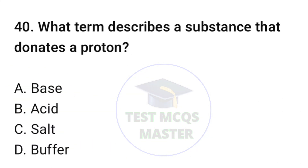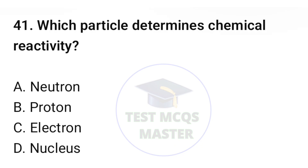Question number forty: what term describes a substance that donates a proton? The correct option is B, acid. Question number forty-one: which particle determines chemical reactivity? The correct option is C, electron.